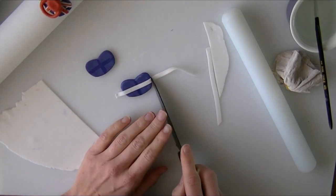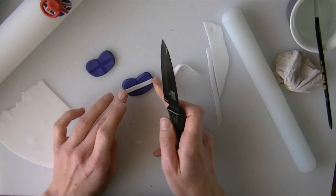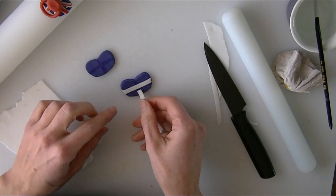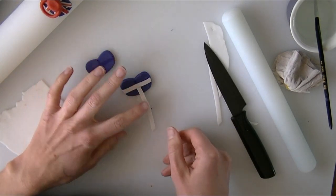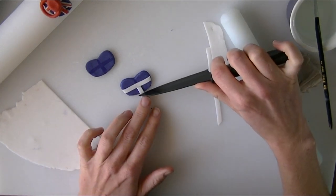I'm just going to trim it at either end where it meets the edge of your dummy. Starting underneath, we're going to cover this middle bit anyway, so you won't see the join.